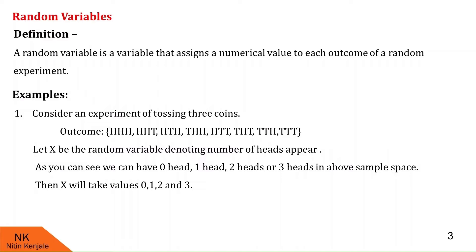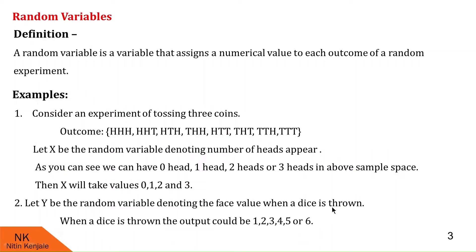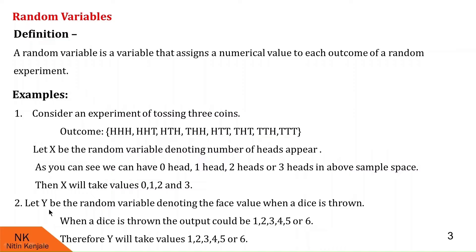Now let us see another example. Let Y be the random variable denoting the face value when a die is thrown. When a die is thrown, the output could be any one of 1, 2, 3, 4, 5, or 6. Then Y will take values 1 to 6.